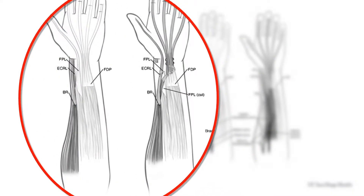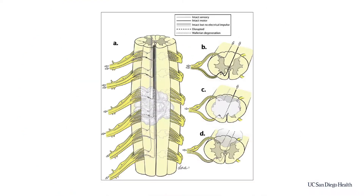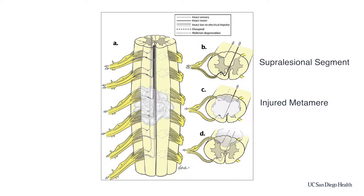Compare this to the tendon transfer using brachioradialis and extensor carpi radialis longus on the left side of the image. This image shows three segments: a supralesional segment where the patient retains normal control of the associated lower motor neurons — potential donors — and a middle segment we call the injured metamere. This is where there has been grey and white matter disruption with interruption of descending signals as well as loss of the cell bodies of the peripheral motor nerves.